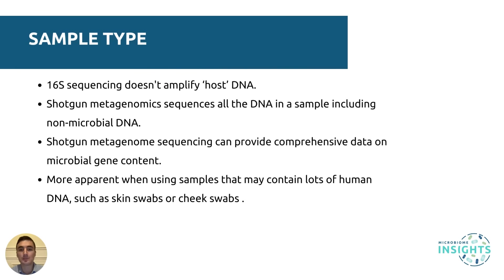As 16S sequencing uses PCR to amplify a specific region of DNA, there is little chance of amplification from the host DNA. Shotgun metagenomic sequencing, on the other hand, sequences all the DNA in a sample, meaning that non-microbial reads may obscure the microbiome results. This is especially apparent in human microbiome studies using samples that may contain lots of human DNA, such as skin swabs or cheek swabs when looking at the skin and oral microbiomes. For such samples, 16S sequencing may be more suitable.